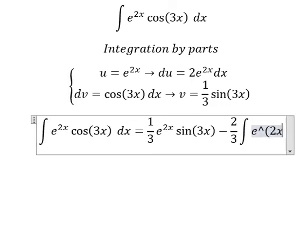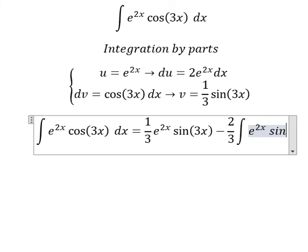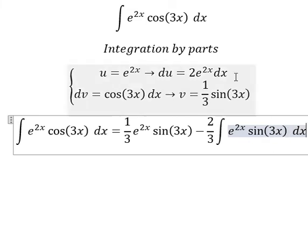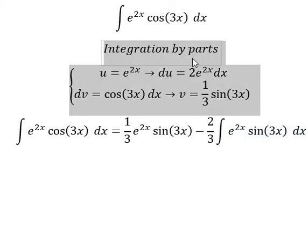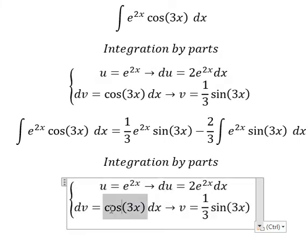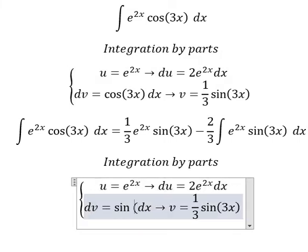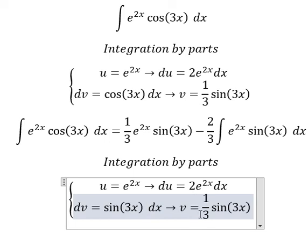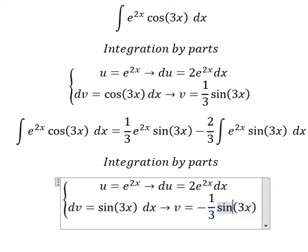Now we continue using integration by parts, but now we change this one into sine 3x, and this one we have negative cosine 3x.